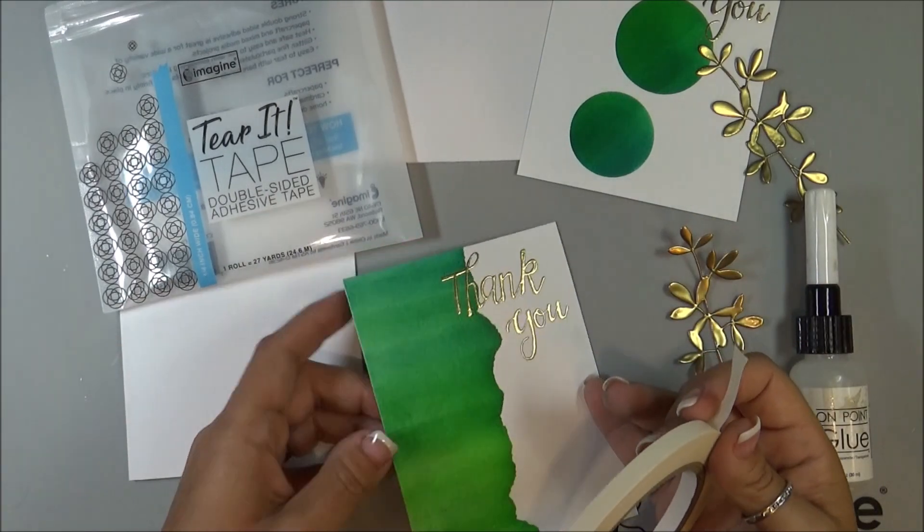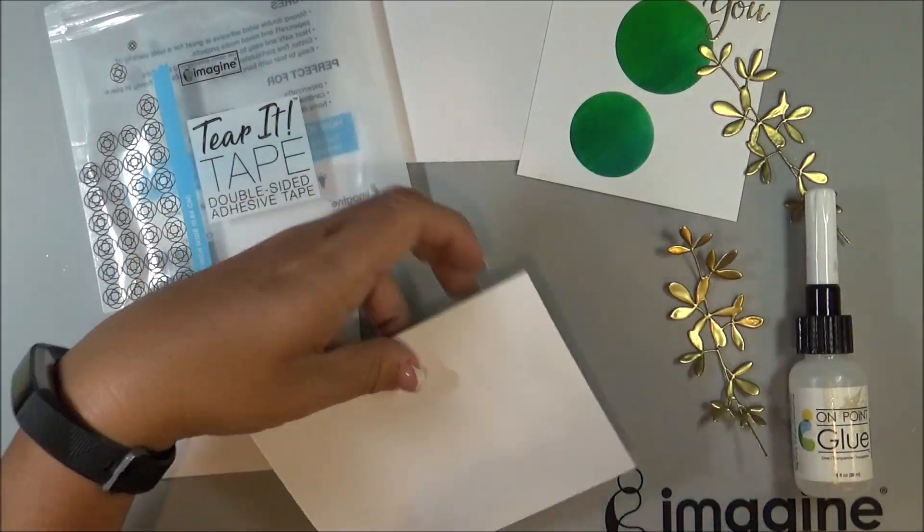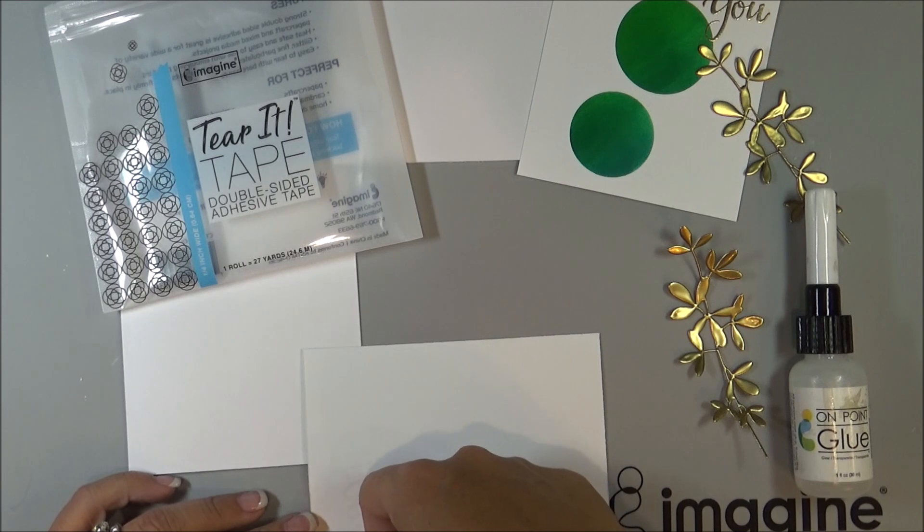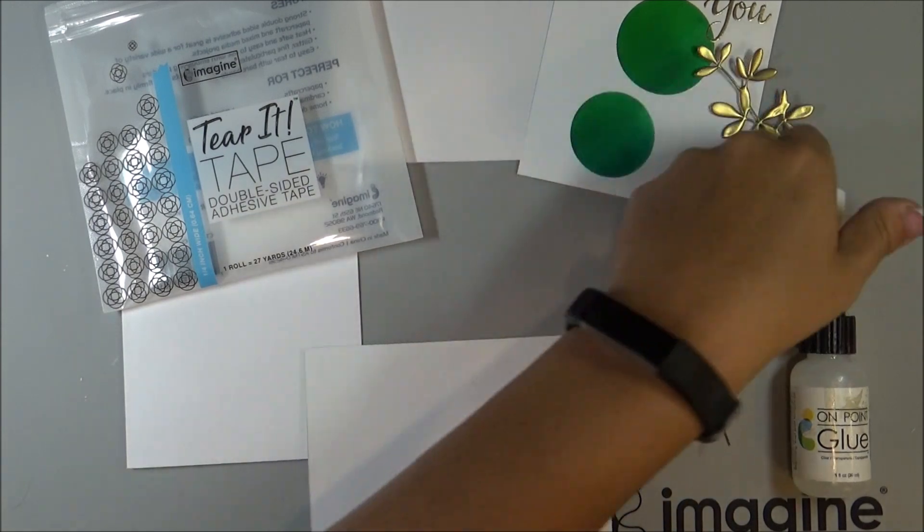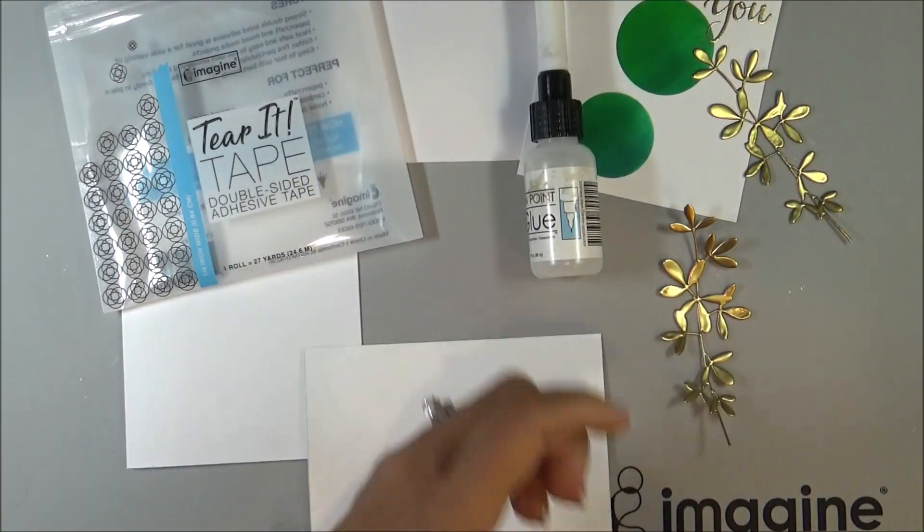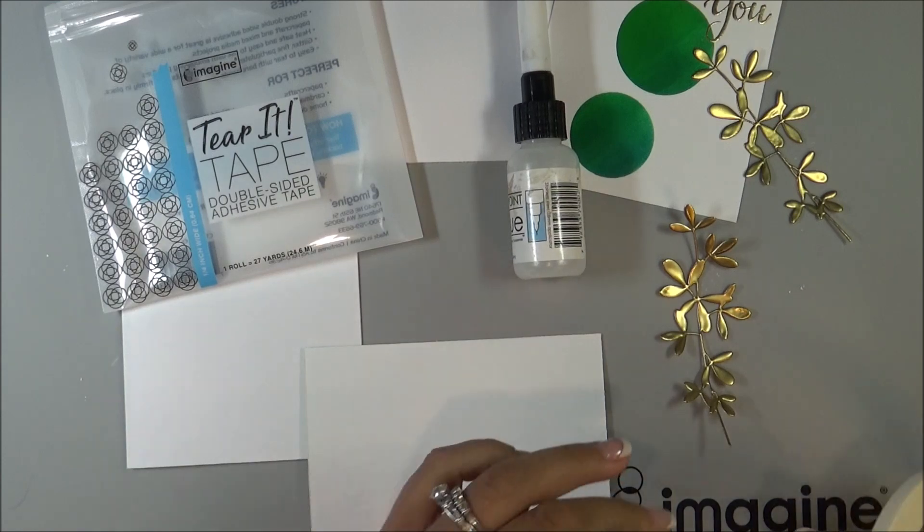So now I'm just going to use some Tombow tape on the back of the card front, and then adhere it to my card base. And then for the die cut piece over here, I'm going to use some on point glue and adhere that down to the front of my card.